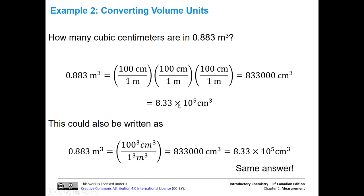And we end up with 883,000 cubic centimeters. If we write that in scientific notation, we get 8.83 times 10 to the fifth centimeters cubed. We have three sig figs in our initial quantity and three sig figs in our answer, so that's perfect.